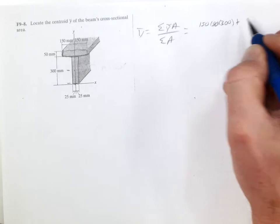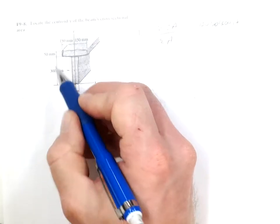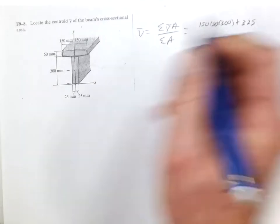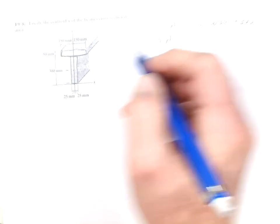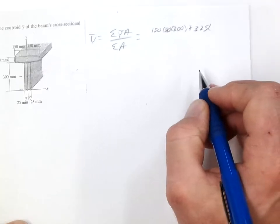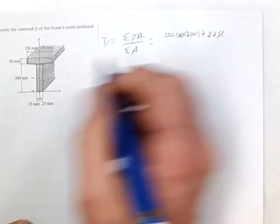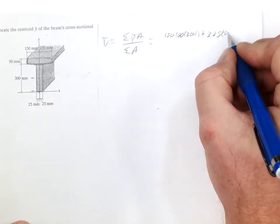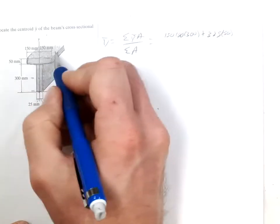And then this other rectangle up here, the y bar is 325. That is all 300 and half of 50. And then the height is 50 and the width is 300 also.